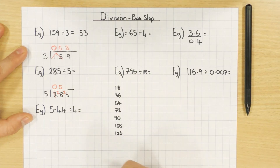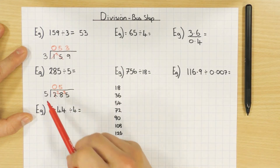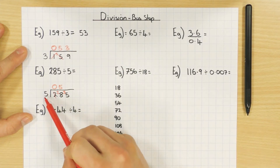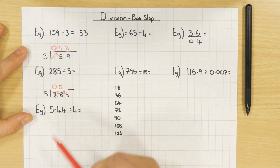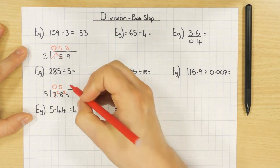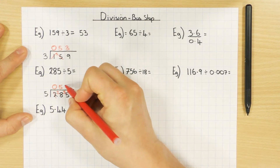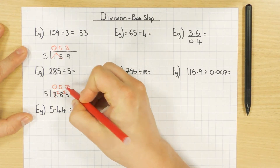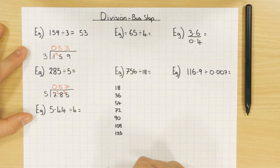3 gets carried over, then how many 5s go into 35? That's 7. So as long as you know your times tables, you're in business.